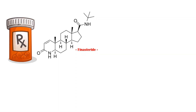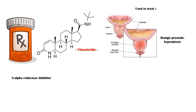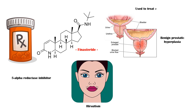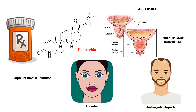Finasteride is a 5-alpha reductase inhibitor used in the treatment of benign prostatic hyperplasia, hirsutism, or abnormal growth of hair in the body and face of a woman, and androgenic alopecia, also called male pattern hair loss. In this video, our main goal is to explore the adverse effects of finasteride.